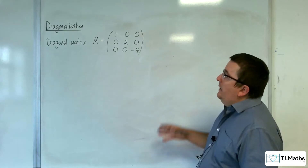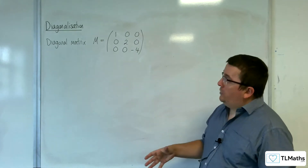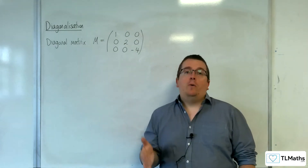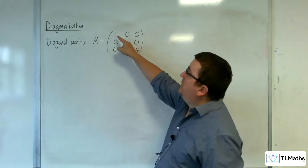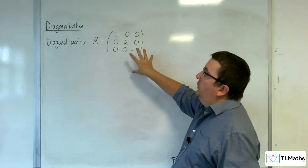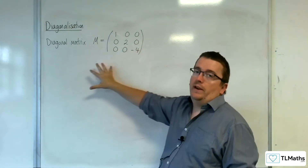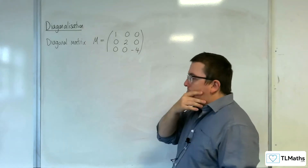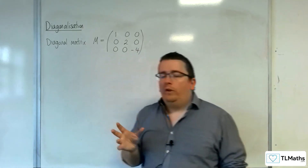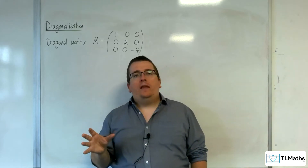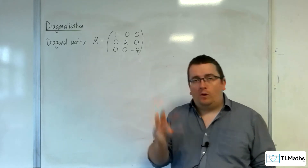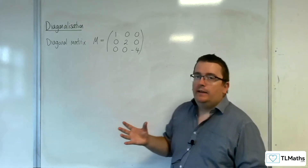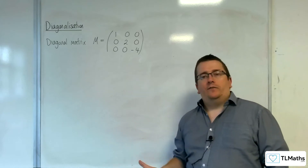A diagonal matrix is a square matrix which only has non-zero elements in the leading diagonal. This is an example of a diagonal matrix. What I want to look at in this video is the properties of this diagonal matrix by investigating its eigenvalues and eigenvectors.